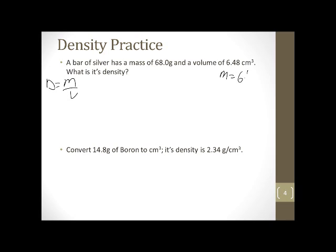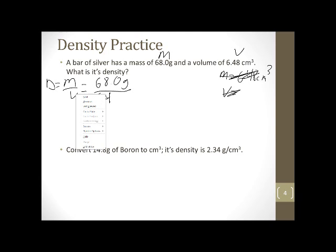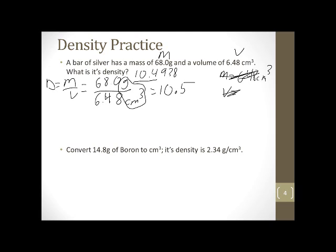M equals 68.0 grams. Volume is 6.48 cubic centimeters. Don't forget the units. D equals 68 divided by 6.48. Plug that into my calculator. I'm going to get 10.4938. I have three sig figs in each, so my answer can have three. So I'm going to get 10 point round this to a 5. And what's my unit? I have it written here so I don't have to memorize anything. Gram per cubic centimeter. Bingo.